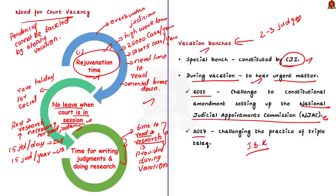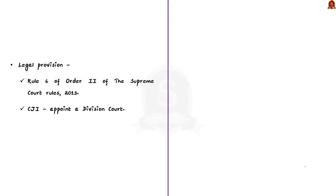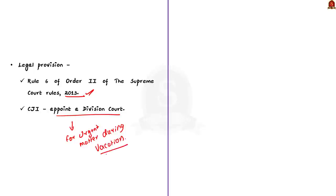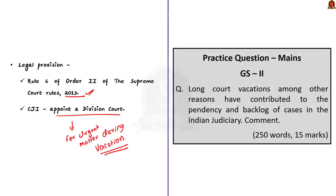So it is not uncommon for the court to work during vacation. The executive must not blame the Supreme Court or the judiciary for pendency of cases and link it to court vacation. Regarding the legal provisions: Rule 6 of Order 2 of the Supreme Court Rules 2013 empowers the Chief Justice of India to nominate division benches to hear urgent miscellaneous and regular hearing matters during summer vacation. Whenever necessary, the Chief Justice may even appoint a division court to hear urgent cases during vacation that require a bench of judges. In this discussion, we saw what court vacation is, four points on the need for court vacation, what a vacation bench is, and the legal provisions enabling vacation benches.